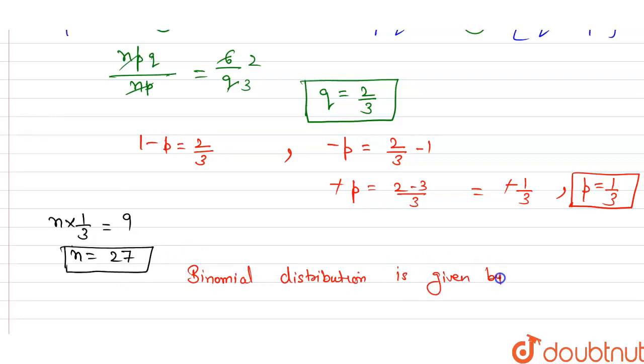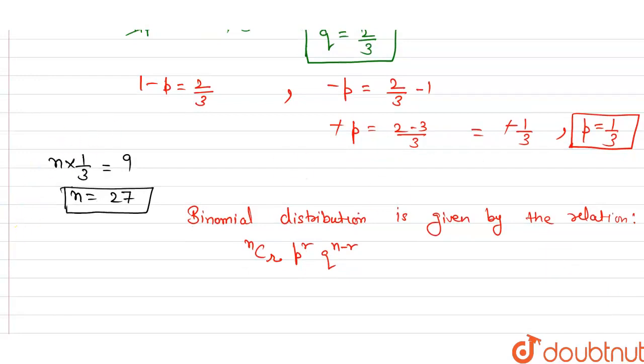get our binomial distribution, then that is equal to, value of n is 27, 27Cr, and value of p is 1 divided by 3 to the power r, and value of q is 2